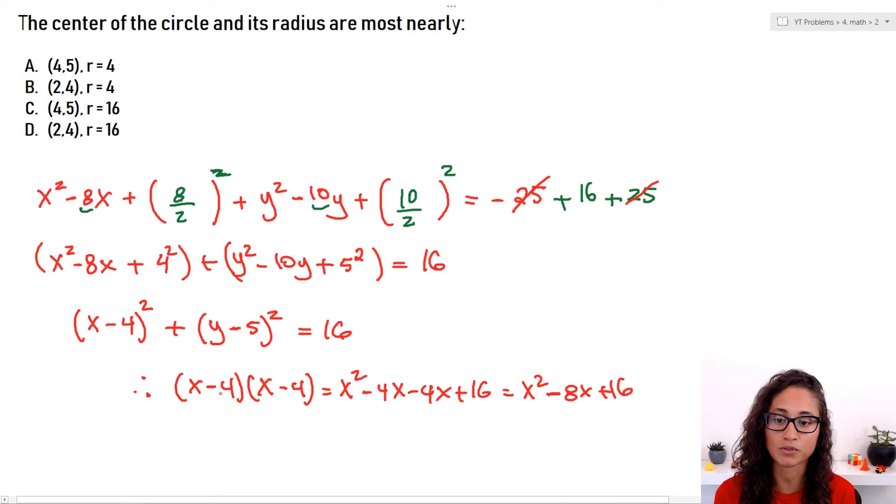x squared minus 8x plus 16. So you can take a little bit of time and try to go from here to here and expand it or you could just rewrite it like this. Keep the 4 squared, keep the 5 squared and then just drop it so that way you're a little bit faster doing the exam. If you have a negative here, make sure this is negative and that's it. And if you're not sure if this is the right answer, well you can just quickly expand it. Make sure when you expand your numbers, you get the same as the original equation that you had.